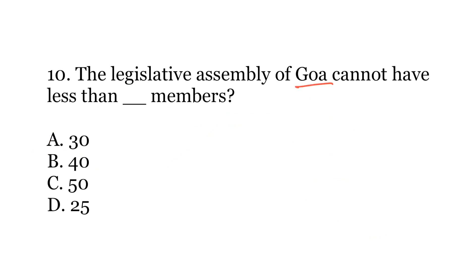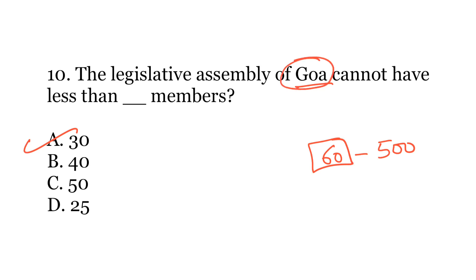Last question: The legislative assembly of Goa cannot have less than how many members? Options: A) 30, B) 40, C) 50, or D) 25. The correct answer is A) Not less than 30 members. Usually states cannot have less than 60 members, but certain states have been given an exception. Under Article 371I of the Constitution, the state of Goa cannot have less than 30 members. Currently, the legislative assembly of Goa has 40 members.